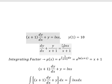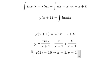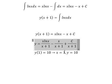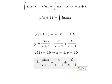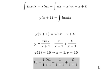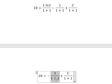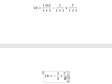Next we apply the initial condition: when s equals 1, y equals 10. We substitute these values in to find C. We simplify — ln(1) equals zero, so that term drops out. This gives us 1 over 2, and this term is 2.